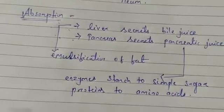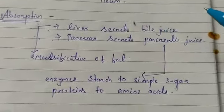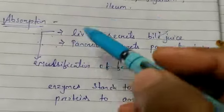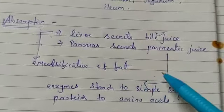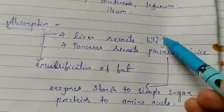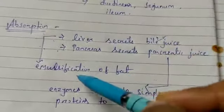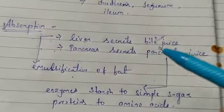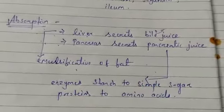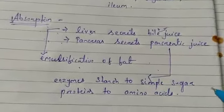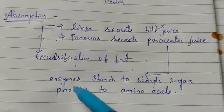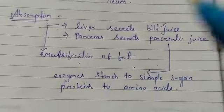In the duodenum, the liver and the pancreas pour their secretions. The liver secretes bile juice and the pancreas secretes pancreatic juice. The bile juice contains bile, which carries out emulsification of fat — that means the fat is broken down into tiny droplets. The pancreatic juice contains several enzymes which convert starch into simple sugar and proteins into amino acids.